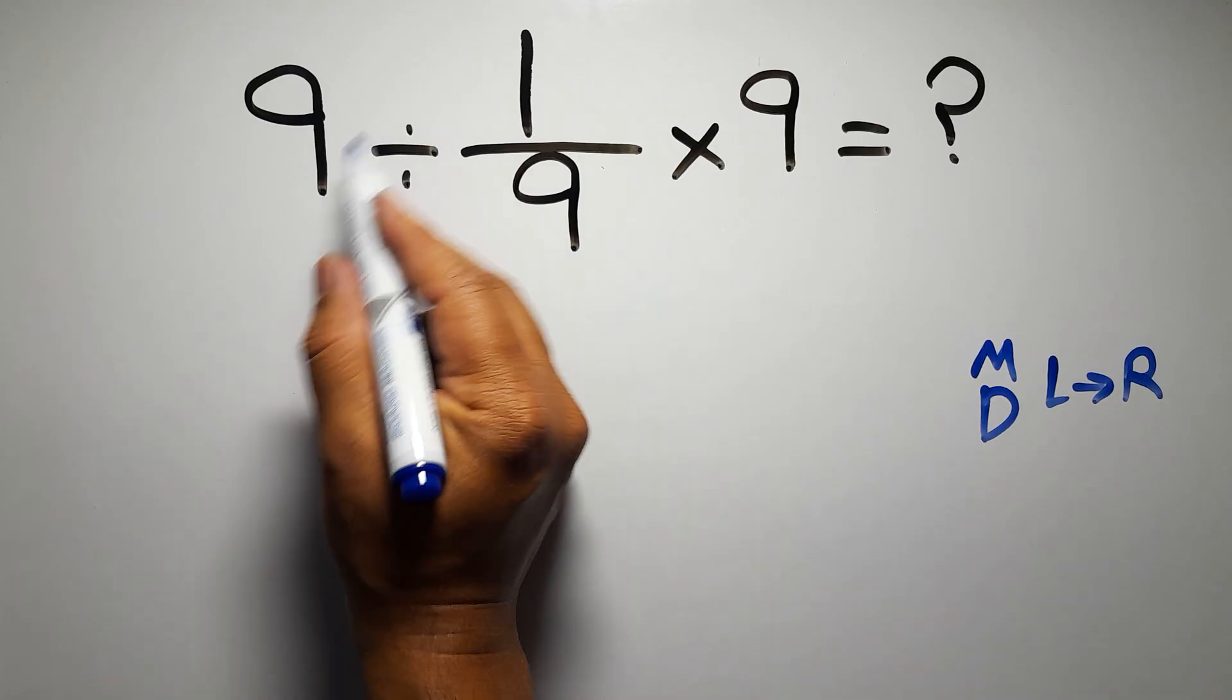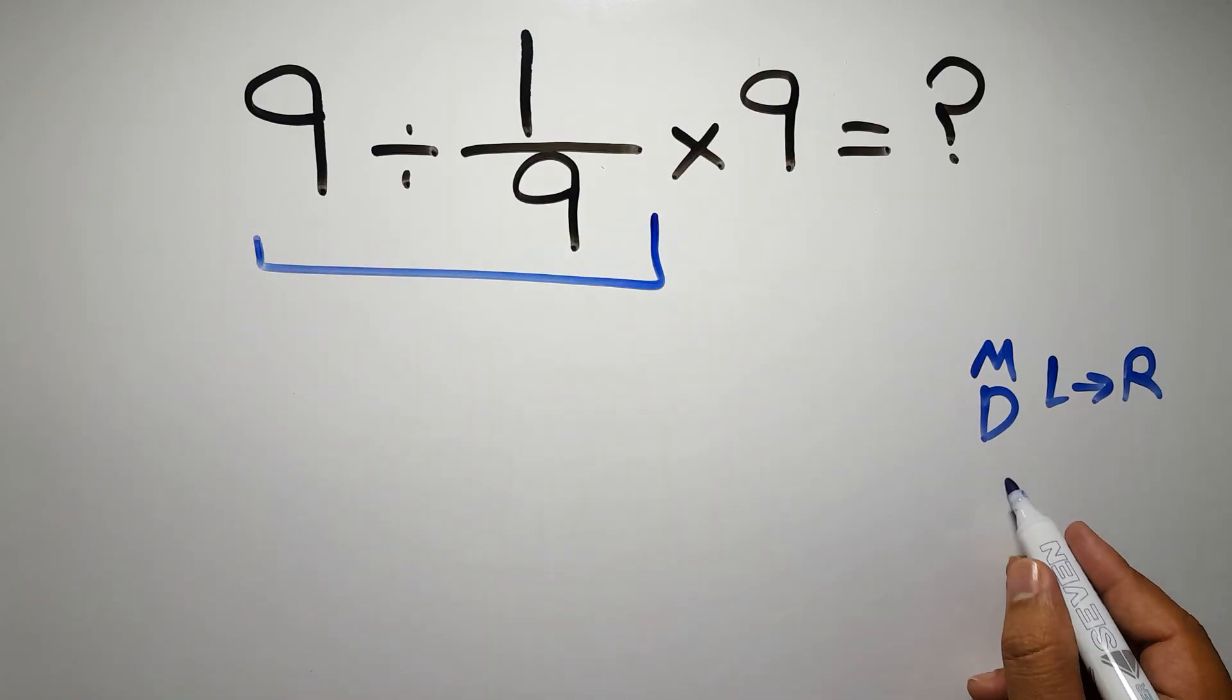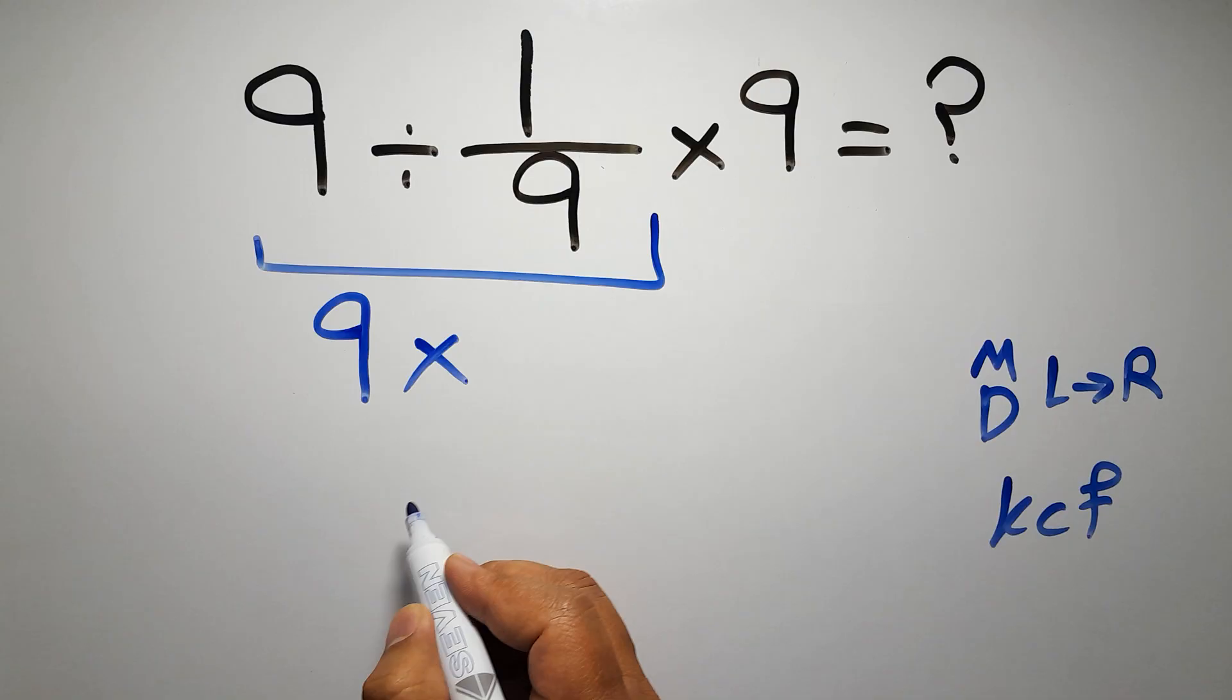So first, this division: 9 divided by 1 over 9. According to the KCF rule—K stands for keep, C stands for change, and F stands for flip—we can write: keep the first fraction, change division to multiplication, and flip the second fraction.